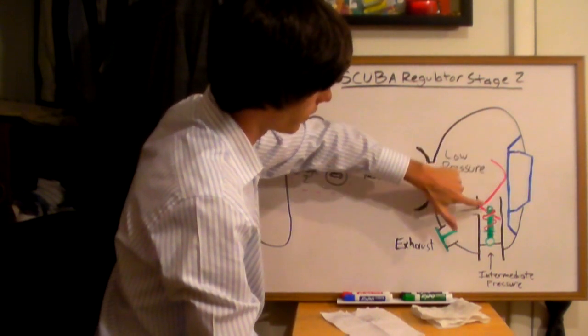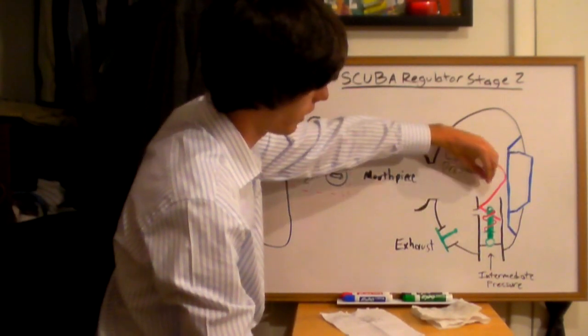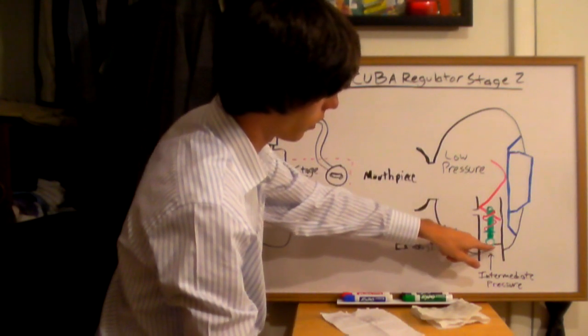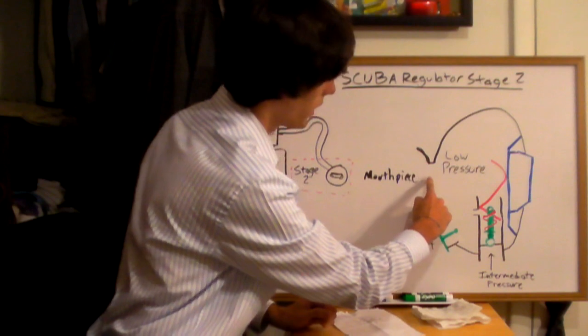This lever is connected to the stopper. So as you push the lever in, it's going to pull up the stopper that's holding out the intermediate pressure, and that pressure is going to be able to come and filter in here.